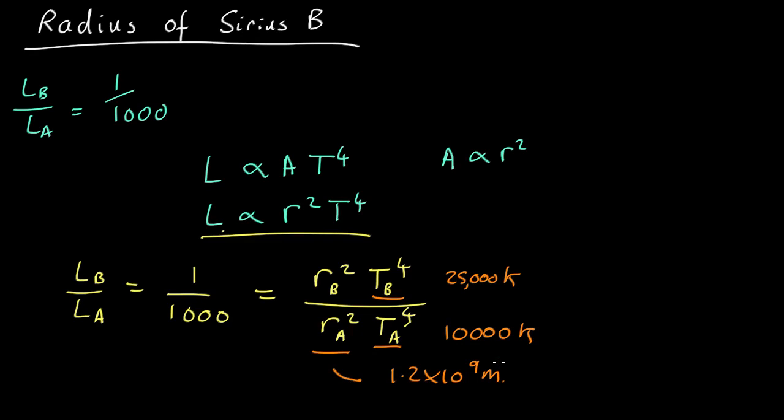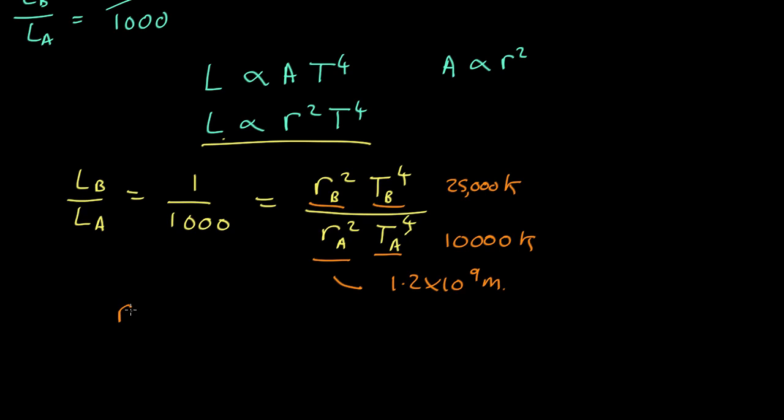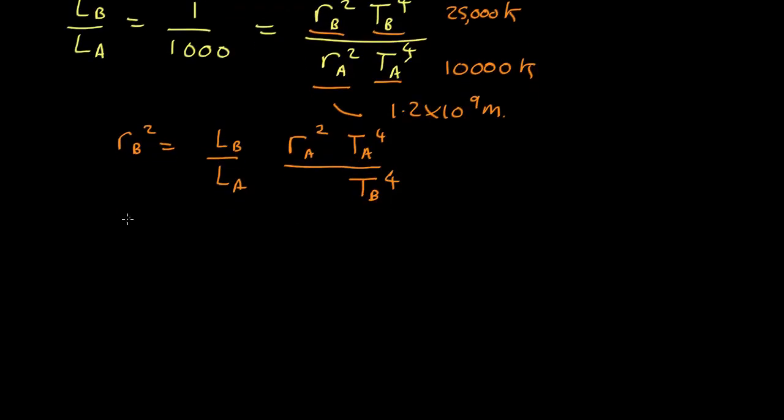So let's rearrange this. What we don't know is the radius of Sirius B, so let's rearrange it so we have that r_B² equals L_B over L_A times r_A² times T_A⁴ all over T_B⁴. Take the square root and we end up with r_B equals r_A times the square root of the luminosity ratio times the ratio of the temperatures squared.